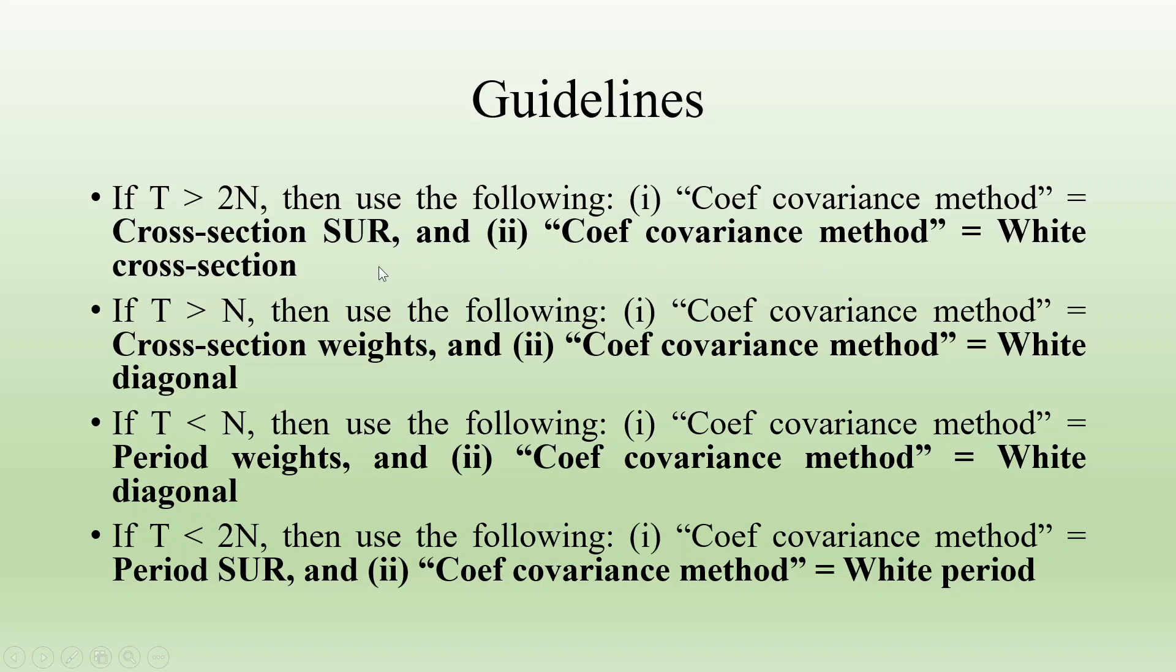If T is greater than N, then use the following: coefficient covariance method with cross-section weights and coefficient covariance method is white diagonal.